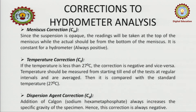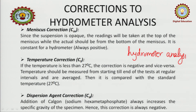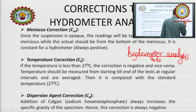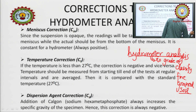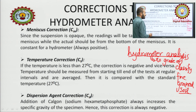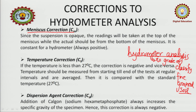Now let us move forward — corrections to hydrometer analysis. If you remember, hydrometer analysis was carried out in order to grade or classify fine grain soil. In this analysis, I had told you about the meniscus correction. There are actually three main corrections in this analysis: the meniscus correction (Cm), the temperature correction (Ct), and the dispersing agent correction (Cd).